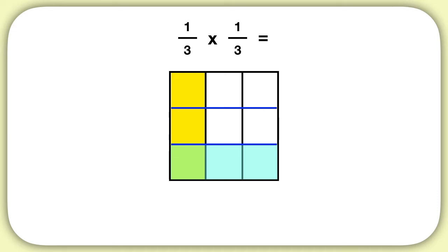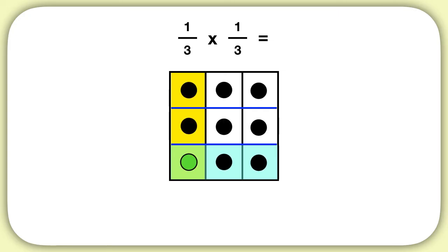You look at the number of pieces that have been shaded twice. We can see one of them right here, and that's out of a total of nine. So our answer is one-third times one-third is one-ninth.